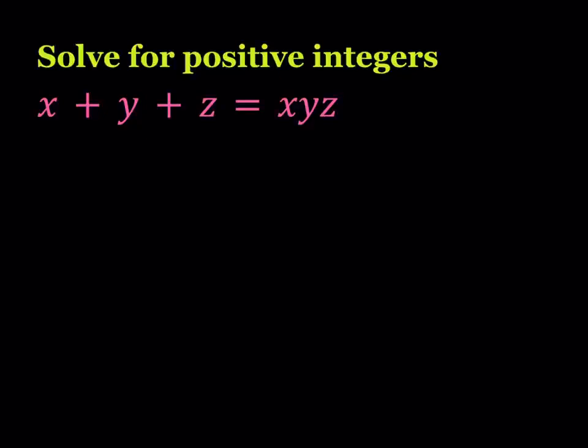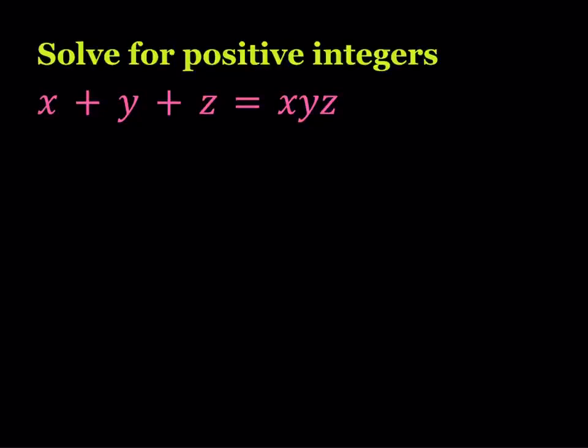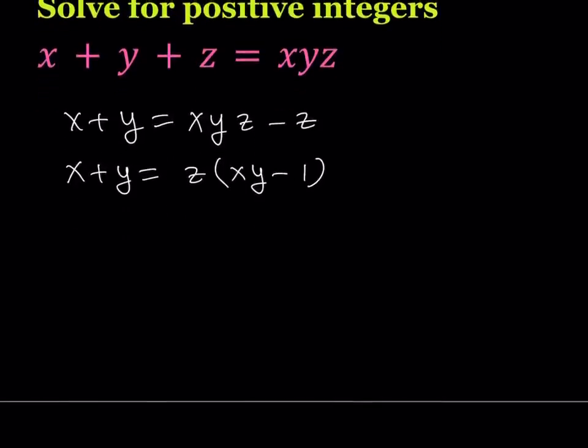Before we look at the positive integer cases, let's take a look at this equation from a different perspective. I know some of you like complex numbers more than real numbers. If you leave x plus y on the left-hand side, in other words subtract z from both sides, then you get x plus y equals xyz minus z. If you factor out a z here, you get x plus y equals z times xy minus 1. If you divide both sides by xy minus 1, that allows you to isolate z in terms of x and y. So we can write that z equals x plus y over xy minus 1.